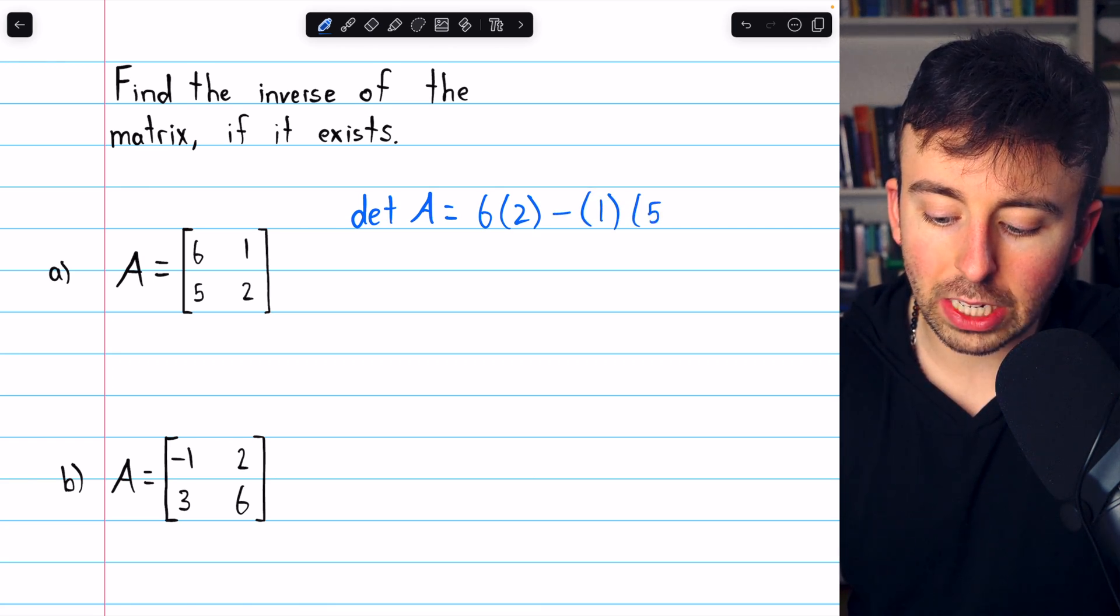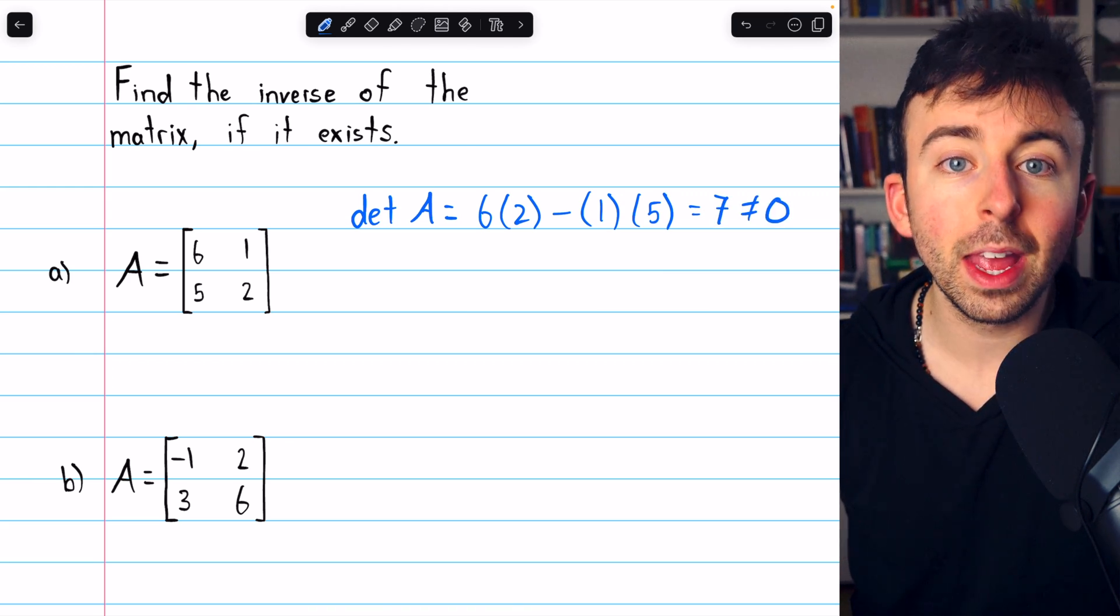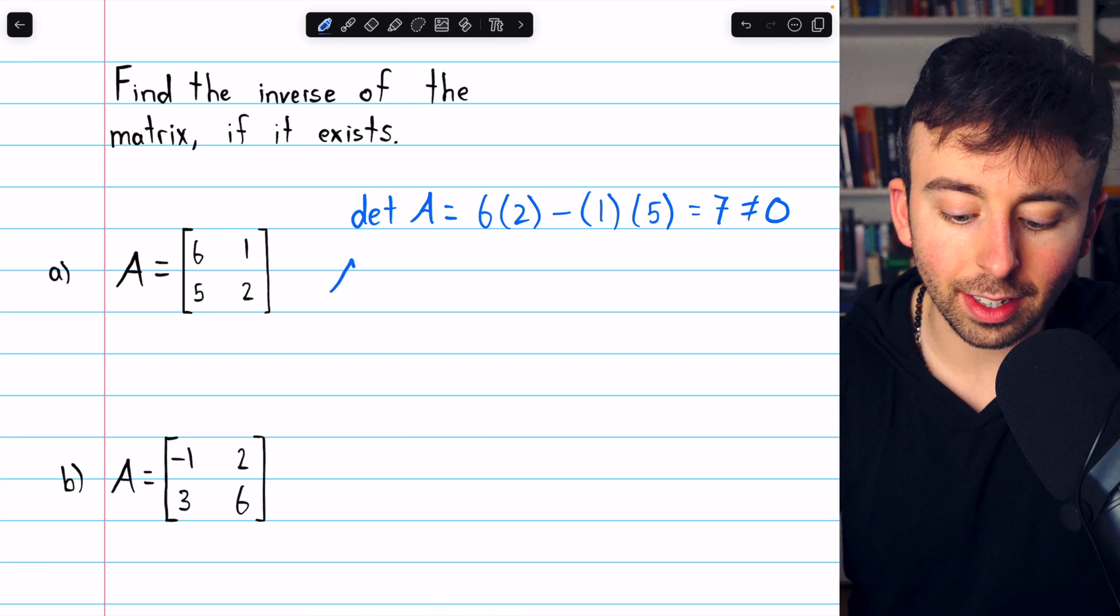So 6 multiplied by 2 minus 1 multiplied by 5. This is going to be 12 minus 5, which is 7. Since this isn't equal to 0, A inverse does exist.